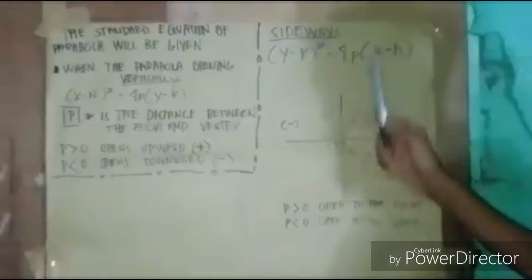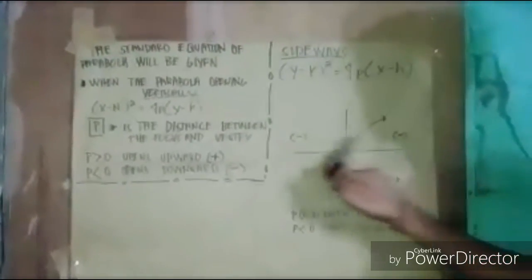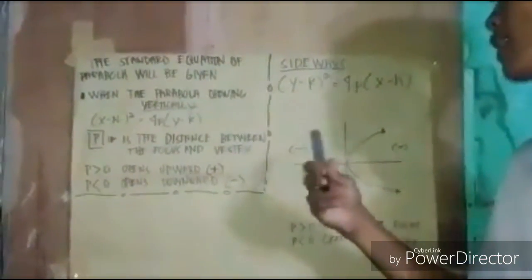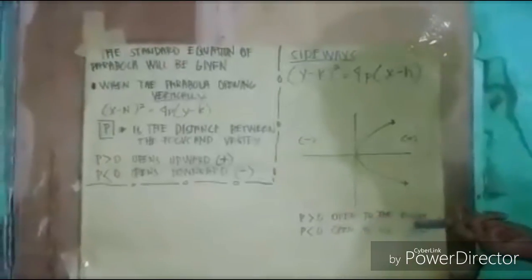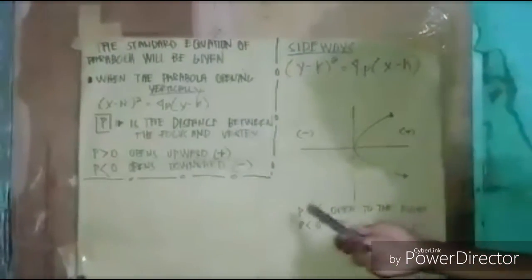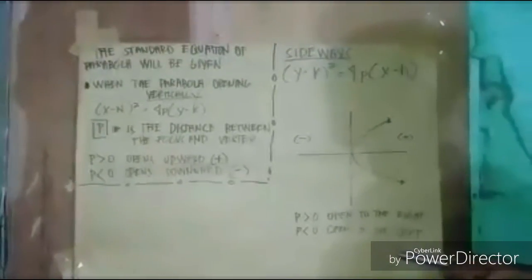Ito yung example ng sideways natin. Kapag open siya ng right, magiging positive siya. And in the other side, left, is negative. This is the p is greater than 0 open to the right. Yun nga guys, p less than 0 open to the left.